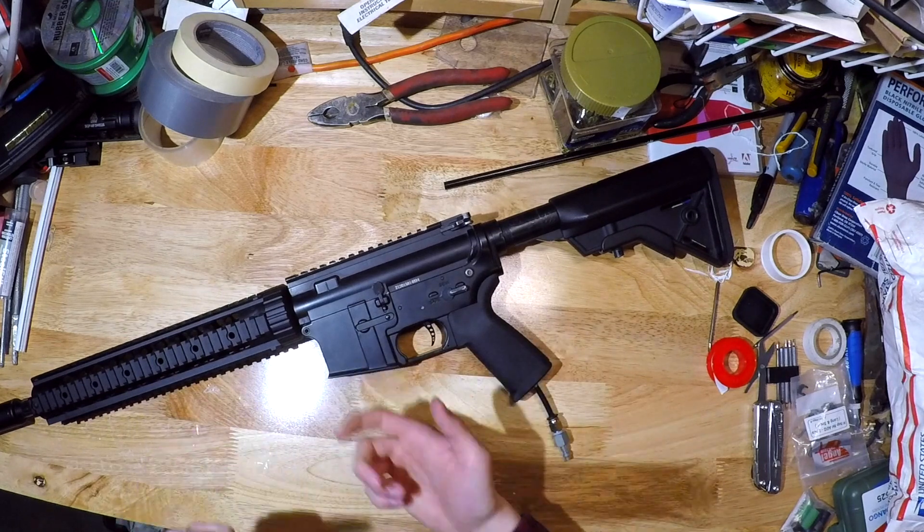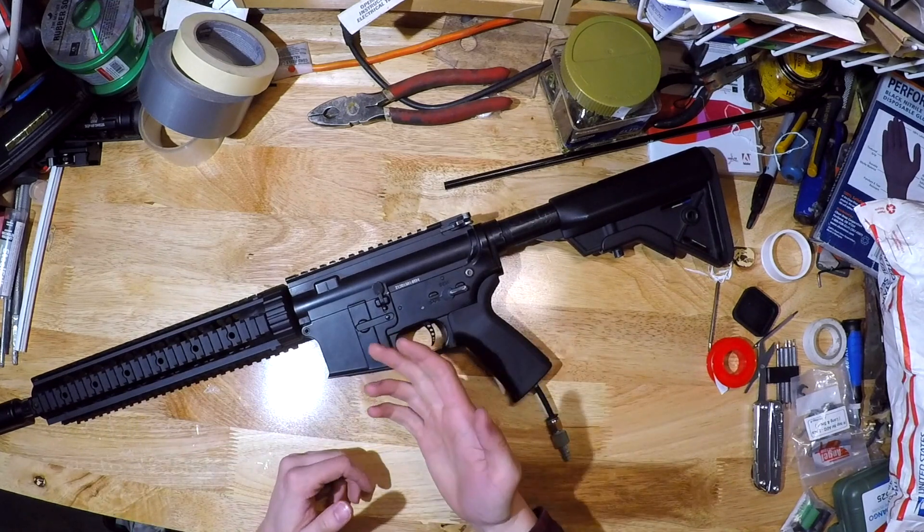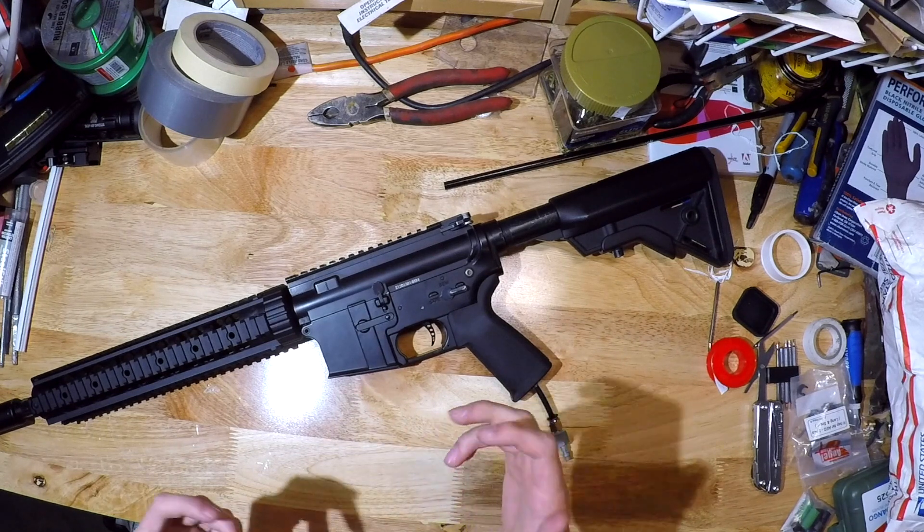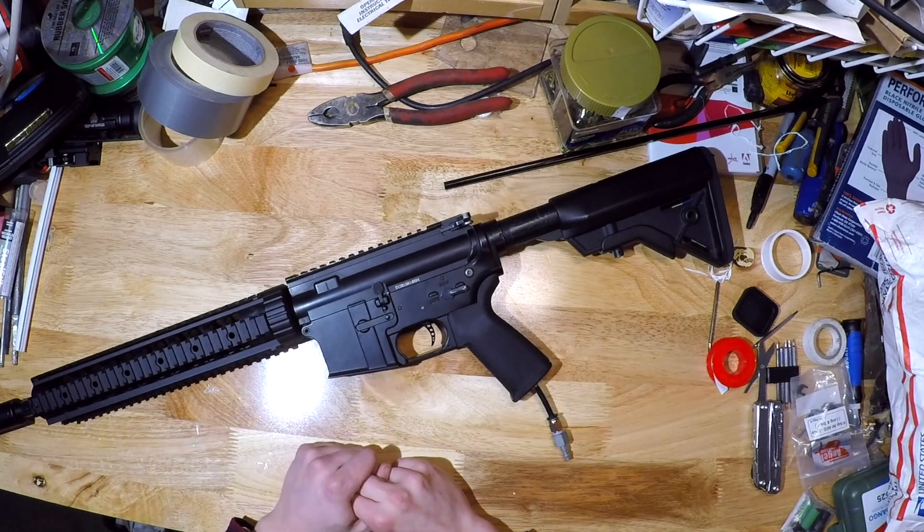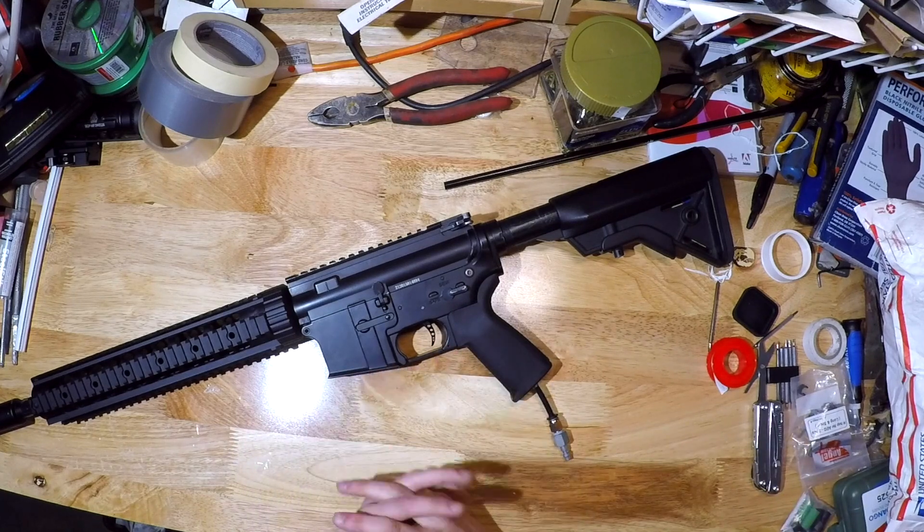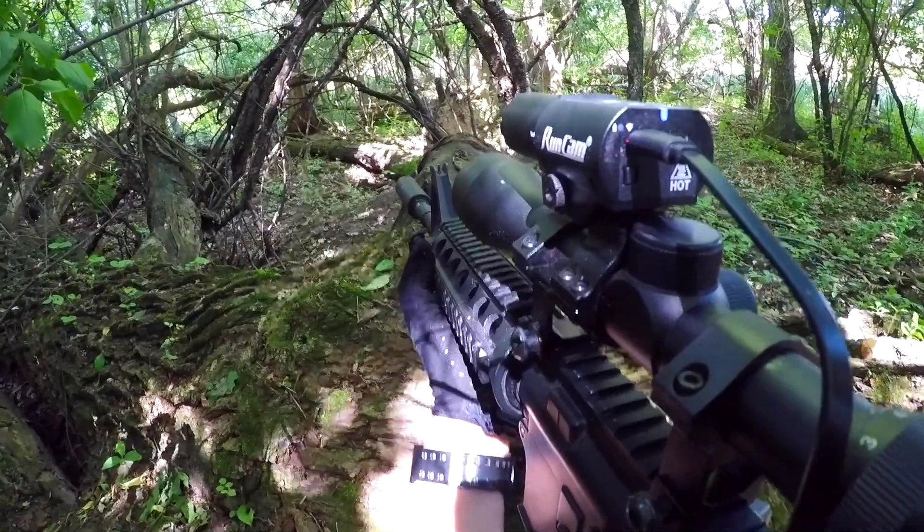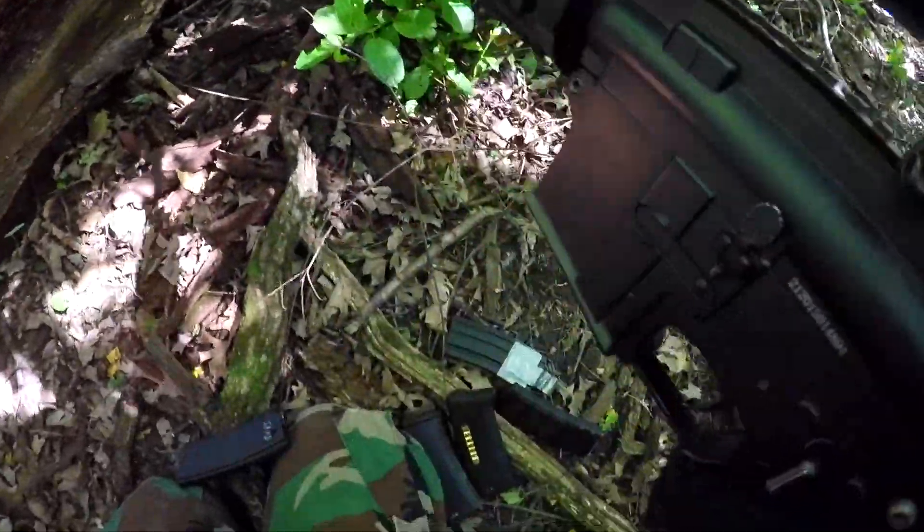So that's going to be how to replace your inner barrel and to configure your hop up rubber with your hop up chamber and your hop up nub and your inner barrel to ensure the most consistency out of your Airsoft BBs. Again, if anyone has any better methods than just taping it and making sure it's centered, please let me know. I'd love to hear it. And with that said, that's going to be it for this video. I hope you all learned something and thanks for watching.